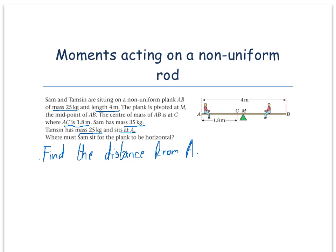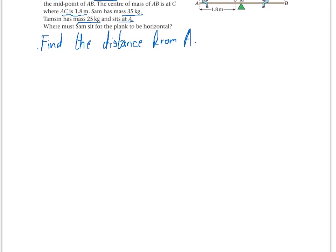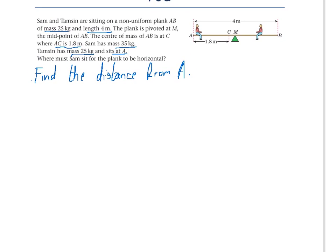Firstly you need to draw a diagram for this question. So firstly we have got a rod to start off with, and our rod has got a middle point here. Now we are told that Tanzim sits at point A, so we call this side A and this side B.